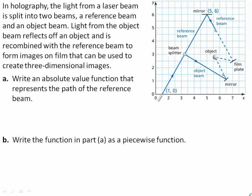In holography, the light from a laser beam is split into two beams: a reference beam and an object beam. Light from the object beam reflects off an object and is recombined with the reference beam to form images on film that can be used to create three-dimensional images.